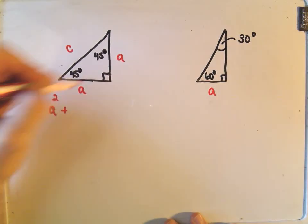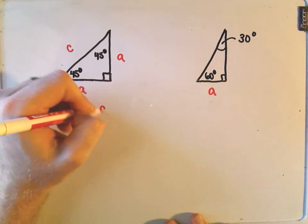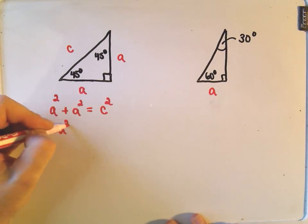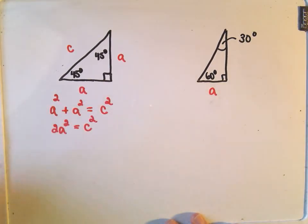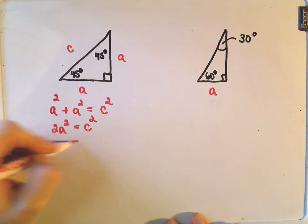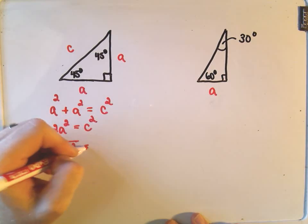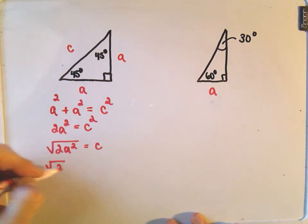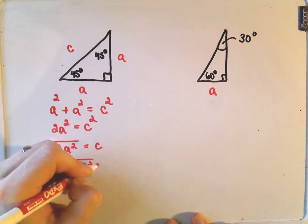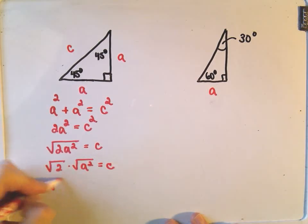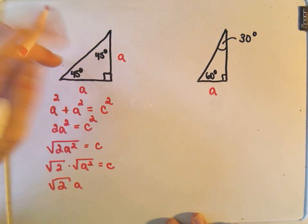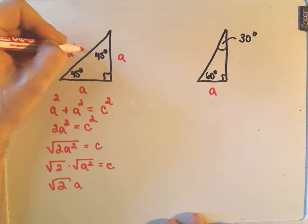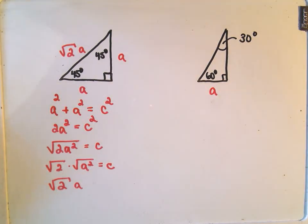We can simply use the Pythagorean theorem here. It says take one side and square it, take the other side and square it, and set that equal to the hypotenuse squared. We've got a² + a², which is simply 2a². To solve for c, we take the square root of both sides. We can break this up as the square root of 2 times the square root of a², and the square root of a² is just a. So this side has length a√2.